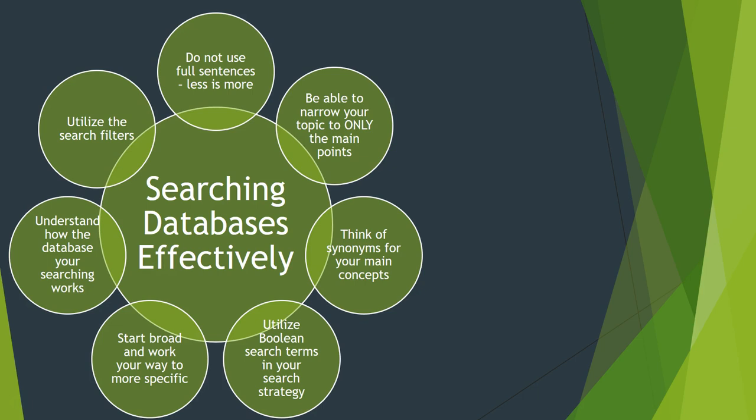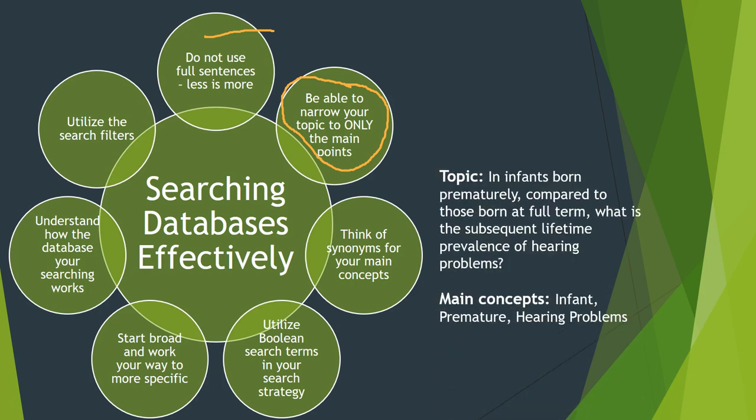The first tip I want to talk about is this one: do not use full sentences when you're searching in databases. Less is more in this case. In Google, you can search a full sentence and it'll know exactly what you're talking about. Scholarly and research databases do not work that way. You really need to narrow down your topic to only the main points. What are the points we care about? What specifically are those words? I have an example here.